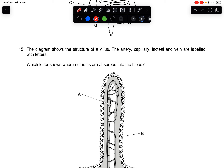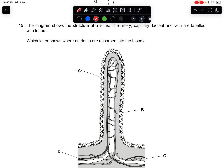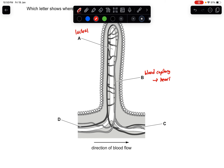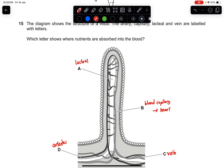Question fifteen: the diagram shows the structure of a villus. Which letter shows where nutrients are absorbed into the blood? Label A is the lacteal, B is the blood capillaries going towards the heart, C is a vein, and D is the artery. Nutrients are absorbed into the capillaries, which are small enough to absorb nutrients and send them into the blood. The answer is B.